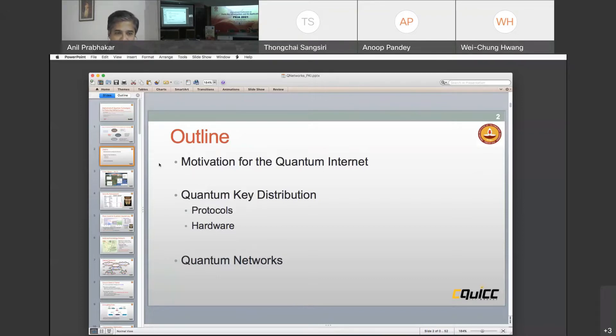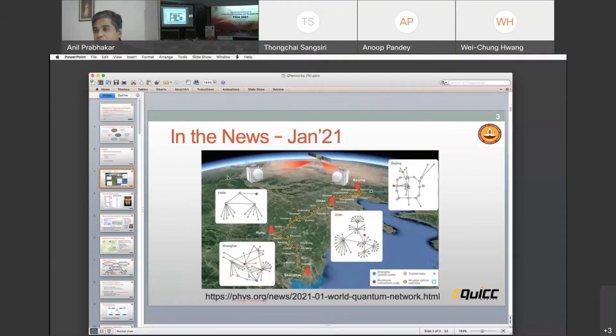I will start with the motivation. The motivation is our neighbor from the north, who in January of this year made a big splash with this picture that shows that they have a quantum internet running from Shanghai in the south to Beijing in the north. What they have also done is they have connected it to other cities.